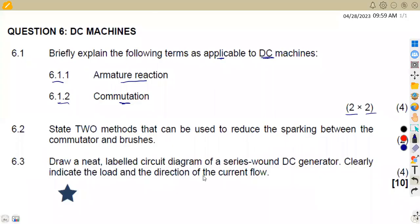So 6.2, state two methods that can be used to reduce the sparking between the commutator and the brushes. So remember, if we are dealing with the commutator and the brushes, we can have this sparking that happens. So what can be done to reduce? That is the methods. That is what they are saying. What can be done to reduce this sparking?